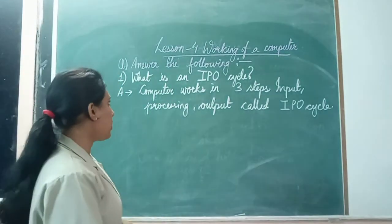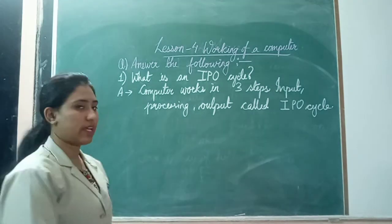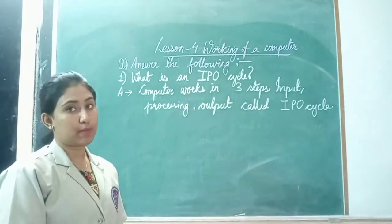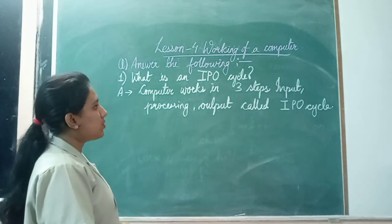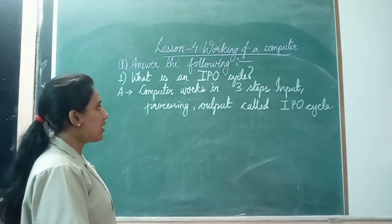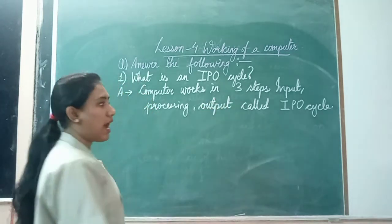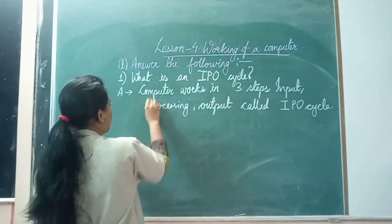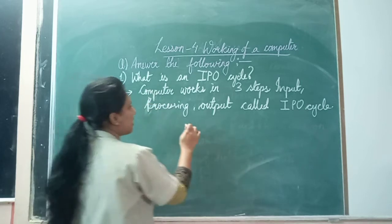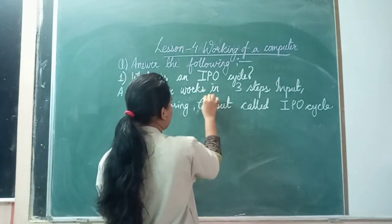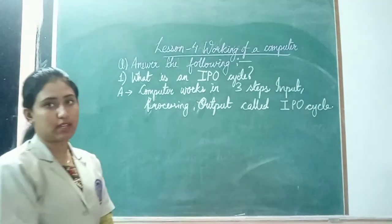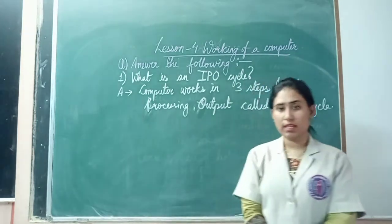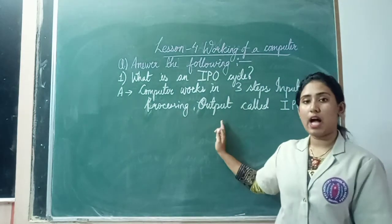Now look here carefully, everyone. Our first question was: what is an IPO cycle? So, computer works in three steps — input, processing, output — called IPO cycle.